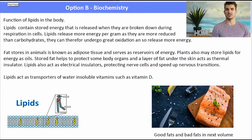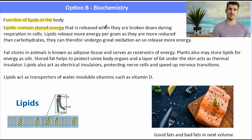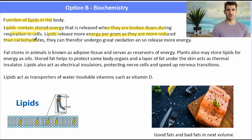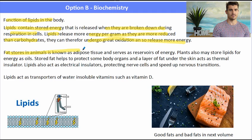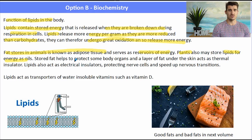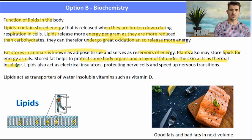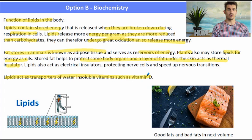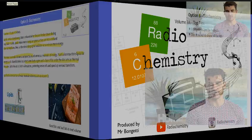What is the function of lipids in the body? Lipids contain stored energy that is released when they're broken down in cellular respiration. Lipids release more energy per gram and are more reduced than carbohydrates, and therefore can undergo a greater amount of oxidation. Fat stores in animals are called adipose tissue and act as a reserve of energy. In plants, essential oils are sometimes used as an energy store. We also use fat to protect vital organs and as a thermal insulator. Lipids can also act as transport for water-insoluble vitamins such as vitamin D.